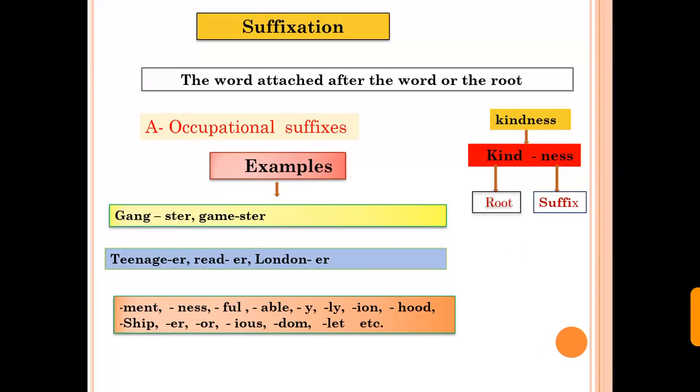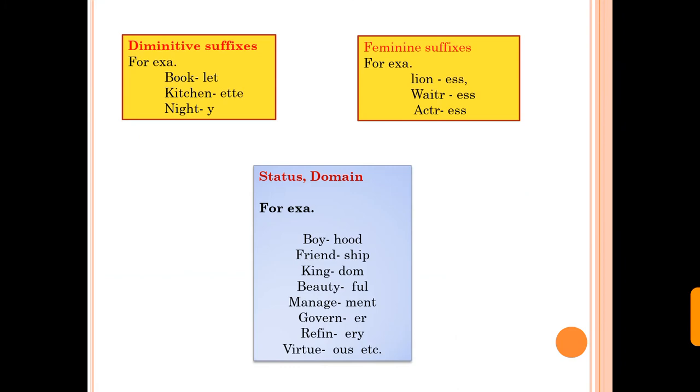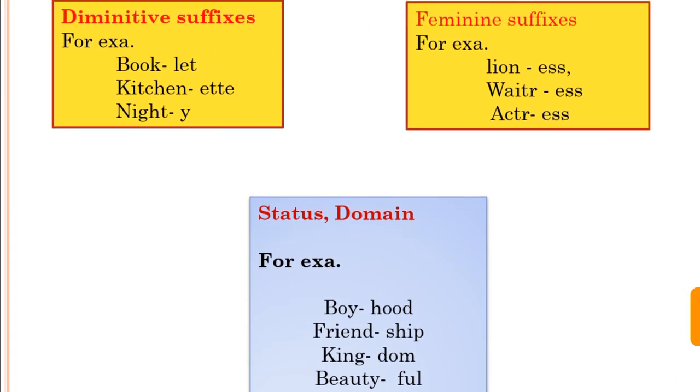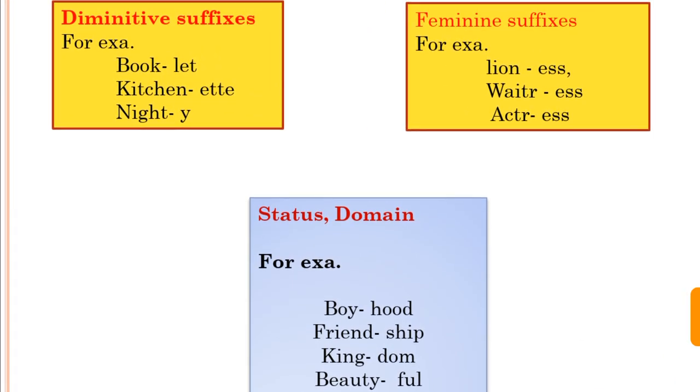Second type of suffix is diminutive suffix. Diminutive suffixes are let, ette, and y. Here are examples: book, booklet, kitchen, kitchenette, night, nighty.